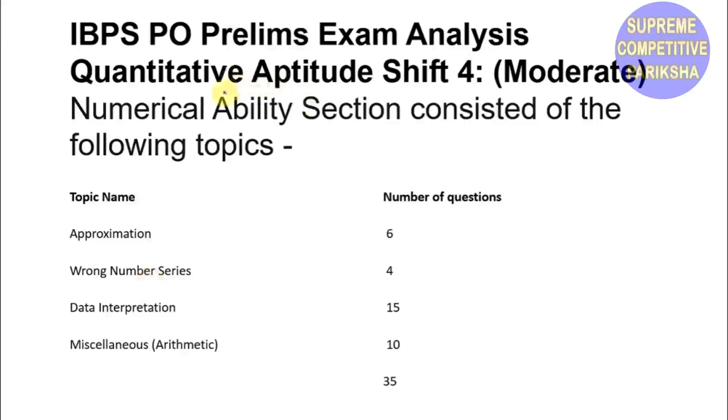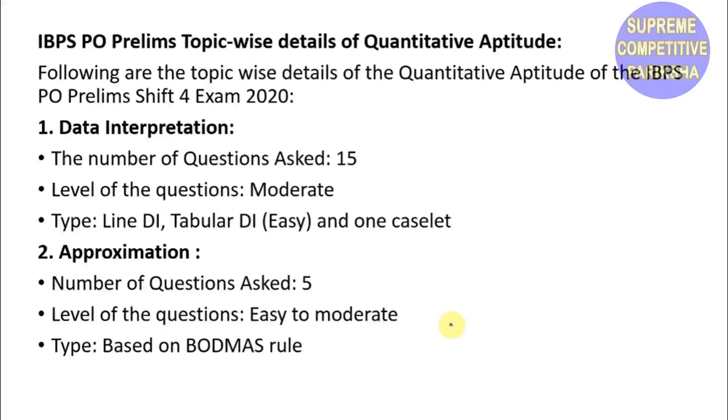Now let's look at Quantitative Aptitude for Shift 4. The Numerical Ability section had moderate level difficulty and consisted of the following types: Approximation with 6 questions, Wrong Number Series with 4 questions, Data Interpretation with 15 questions, and Miscellaneous Arithmetic with 10 questions. Total 35 marks for this section.